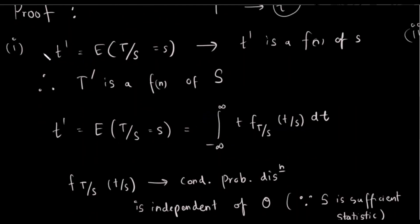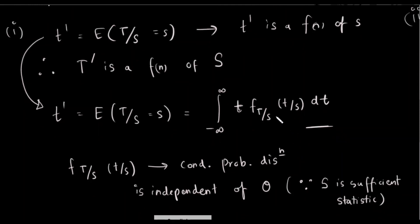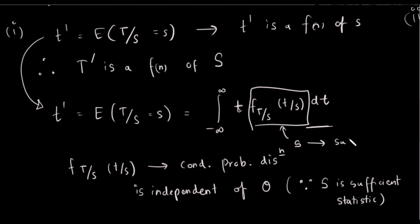If we have a conditional expectation, we can find conditional expectations using conditional probability distribution. We will use S because S is the sufficient statistic. The definition of sufficient statistic is that the conditional probability distribution is independent of the parameter theta.